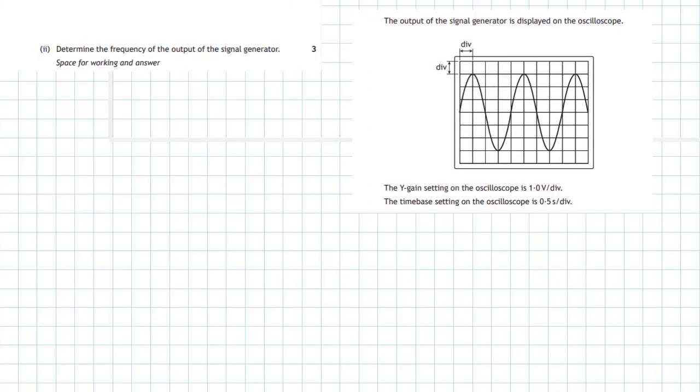Part (ii): Determine the frequency of the output of the signal generator. The frequency of the supply can be found by saying 1 divided by the period. The period T of that signal is the time it takes for one complete cycle - that's from here all the way to there. That takes one, two, three, four - four boxes or four divisions. So we put in four divisions and multiply it by what one division is, and one division is 0.5 seconds.